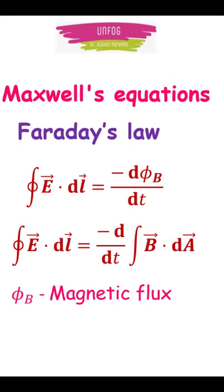Third is Faraday's law, indicating that the changing magnetic field creates electric field. Here phi_B is the magnetic flux, which is the total magnetic field that passes through a given area.